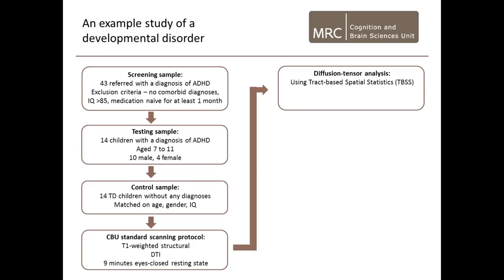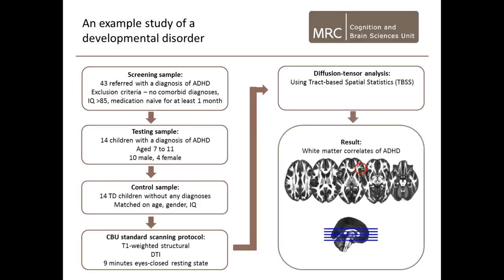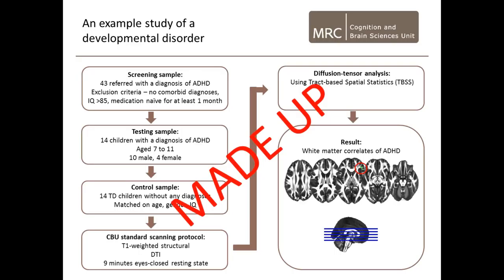We used a technique for analysing DTI data using fractional anisotropy called TBSS, or Track-Based Spatial Statistics. It's a whole-brain method which relies on warping all of the children into a common skeleton template so you can do voxel-wise comparisons across children. When we did that, we found this tract in the right inferior frontal area, which I've highlighted with a red circle, and so that, presumably, is the neural correlate of attention problems.